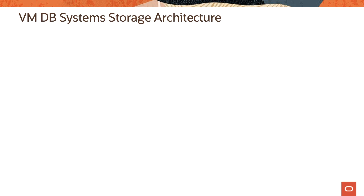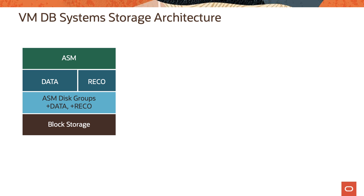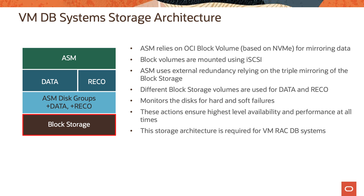Let's now look at the VMDB systems storage architecture. VMDB systems use the block storage service for database storage. It uses ASM on top of the OCI block volumes for mirroring data. Block volumes are mounted to the VMs using iSCSI, and ASM uses external redundancy, relying on the triple mirroring of the block storage. When the ASM disk groups are carved out, different block storage volumes are used for the data and REDO disk groups.